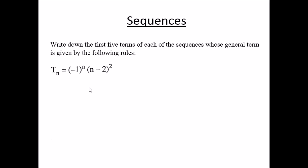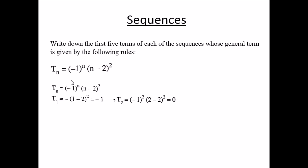Example: write down the first five terms of the sequence whose general term is T(n) = (-1)^n × (n-2)². At n=1: T(1) = (-1)^1 × (1-2)² = (-1) × (-1)² = (-1) × 1 = -1. At n=2: (-1)^2 × (2-2)² = 1 × 0 = 0, so T(2) = 0.